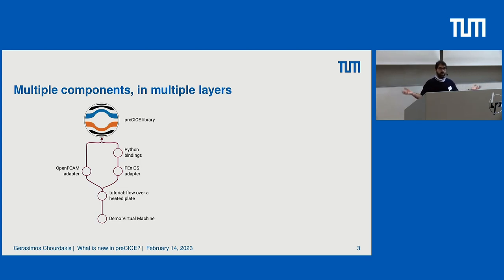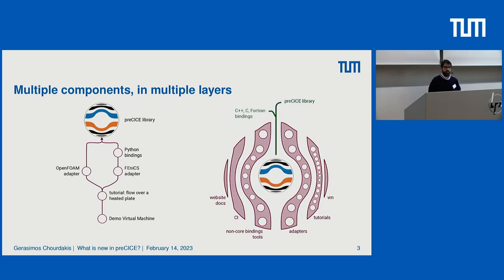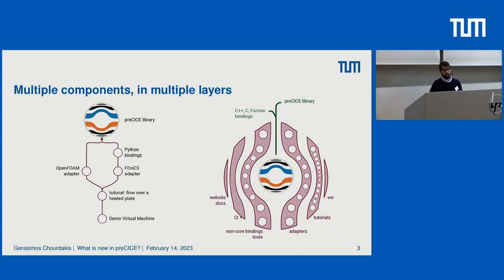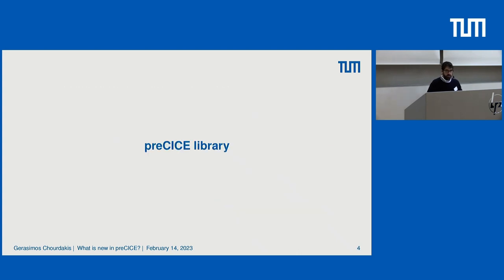This is the Precise ecosystem, including the core library and much more. I like to see it as an onion with multiple layers — of course, the more layers you peel, sometimes the more you cry. Every layer has multiple components. Apart from what I mentioned, we also have many continuous integration tools, automated builds of our website, and documentation rendering. Let's first focus on the Precise library, and later I'll talk about the rest of the ecosystem and news from the community.